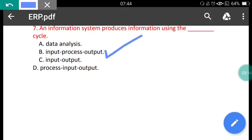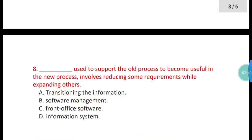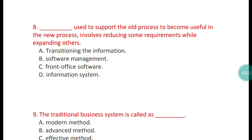Question 8: What is used to support the old process to become useful in the new process, involving reducing some requirements while expanding others? The options include transitioning the information, front office software, and information system. The correct answer is option A — transitioning the information is used to support the old process to become useful in the new process.